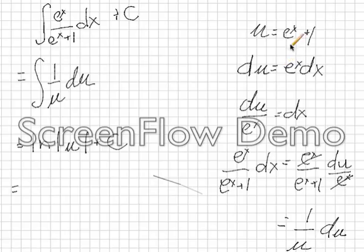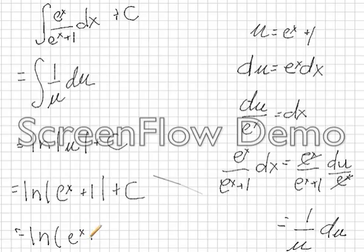Putting everything back in terms of x, since we defined u as e to the x plus 1, this becomes ln of the absolute value of e to the x plus 1 plus C. Fortunately, e to the x is always greater than 0, so if you want, you can actually drop the absolute value in this case. It's up to you, and we can say this is equal to ln of e to the x plus 1 plus C. And that will be your final answer.